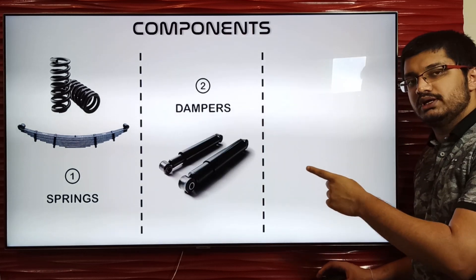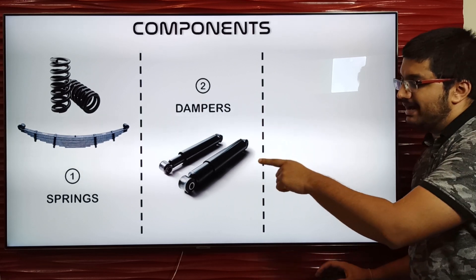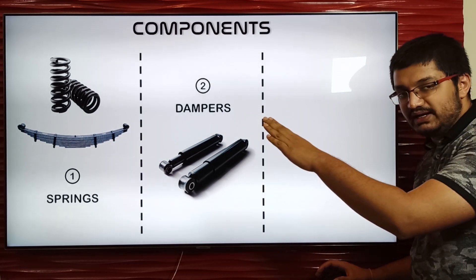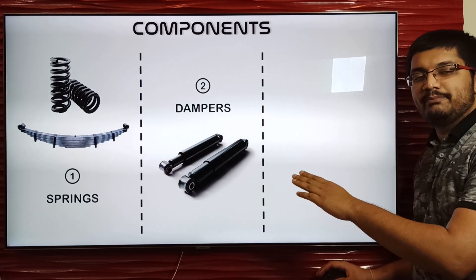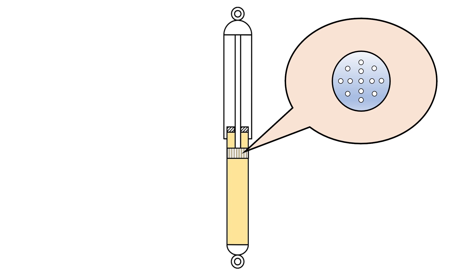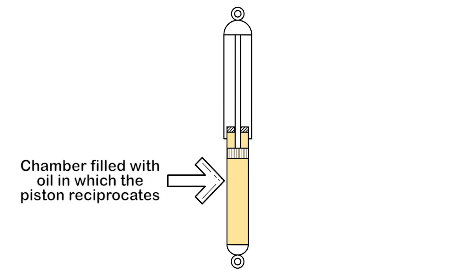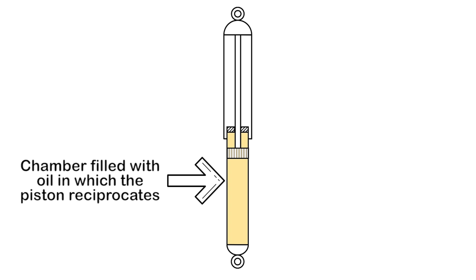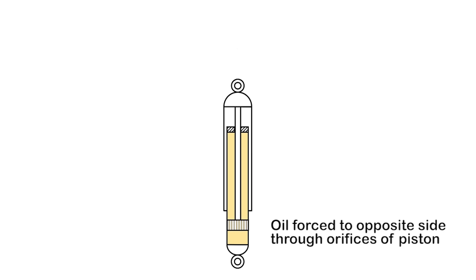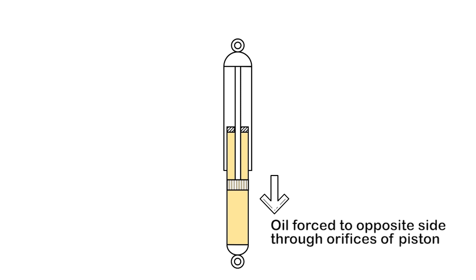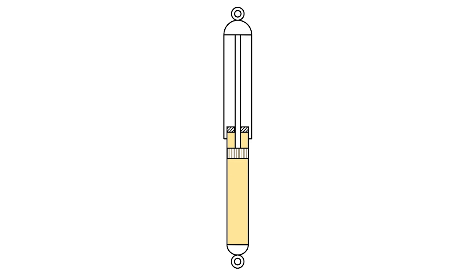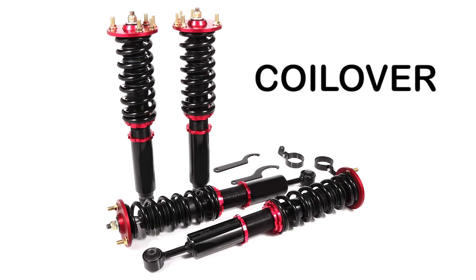That is where dampers come into the picture. Dampers help dissipate the energy stored by the spring and hence reduce the forces. The damper has a piston with small orifices and a chamber filled with oil in which the piston reciprocates. One end is connected to the wheel side and the other to the frame. When the piston moves due to wheel motion, oil is forced through the small orifices to the opposite side, imposing restriction and dampening the forces. Sometimes dampers and springs are combined as one unit, with the spring positioned over the damper — these are called coilovers.